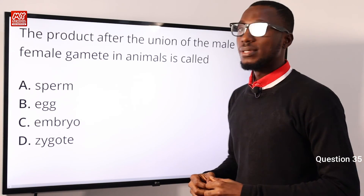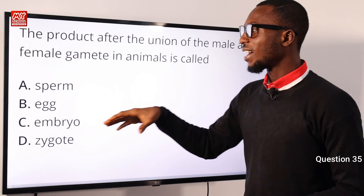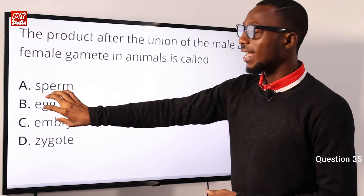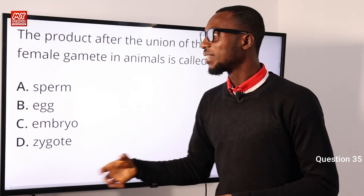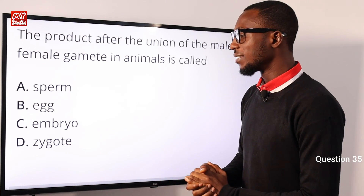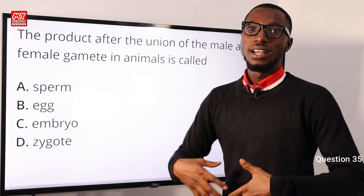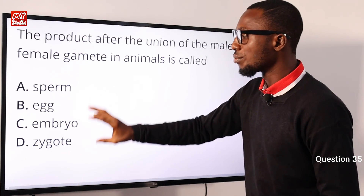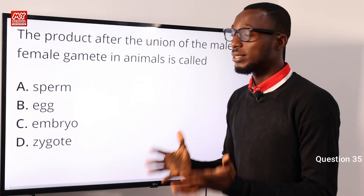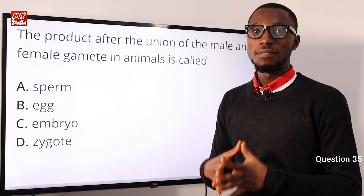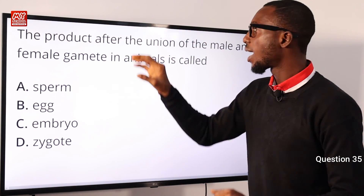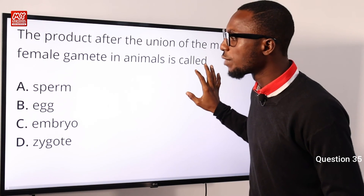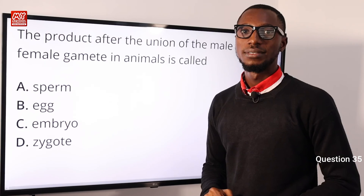Question 35: The product after the union of the male and female gametes in animals is called what? The male gamete is the sperm cell and the female gamete is the egg cell. The sperm fertilizes the egg to form a zygote. The zygote then develops into a blastocyst, then into an embryo, then a fetus, and finally a baby. The immediate product of the union of gametes is the zygote. Option D is correct.